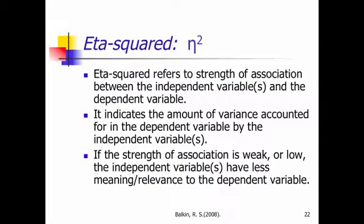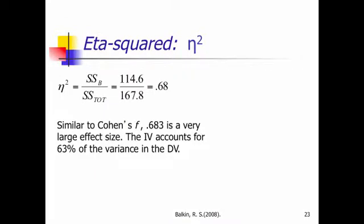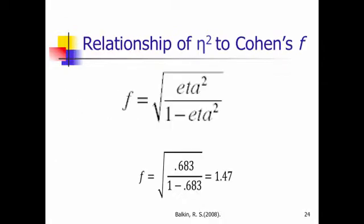Eta squared refers to the strength of association between the independent variable and the dependent variable. In other words, is the independent variable contributing to the change in the dependent variable? To what degree is it contributing that change? It indicates the amount of variance accounted for in the model, and if the strength of association is weak or low, the independent variable is not having much meaning or relevance or effect on the dependent variable. So, in this case, we just take the sum of squares between and divide it by the sum of squares between plus the sum of squares within, known as the sum of squares total, and you get a value of 0.68, which means that 68% of the variance was accounted for in the model. That's a large amount of variance. Well, remember, we had a large effect size with the Cohen's F, 1.31. Well, this is 63% of the variance.